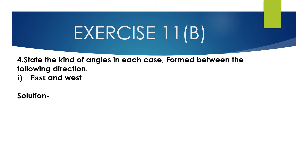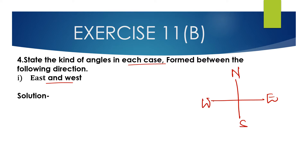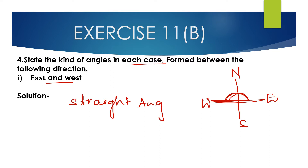Question number 4: State the kind of angles formed between the following directions. First bit: East and West. On the compass, from east to west is 180 degrees. So this is a straight angle. The angle formed between the direction east and west is a straight angle.